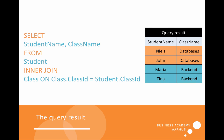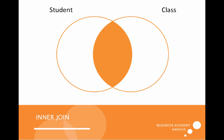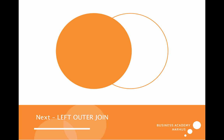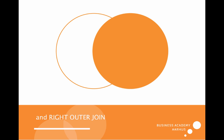The query result shows two columns: student name and class name. These are the two columns I get because I selected student name and class name and joined them on class through the class ID. The inner join can be illustrated as the common ground between two tables — anything outside is not included. The next video will be about left outer join and right outer join.